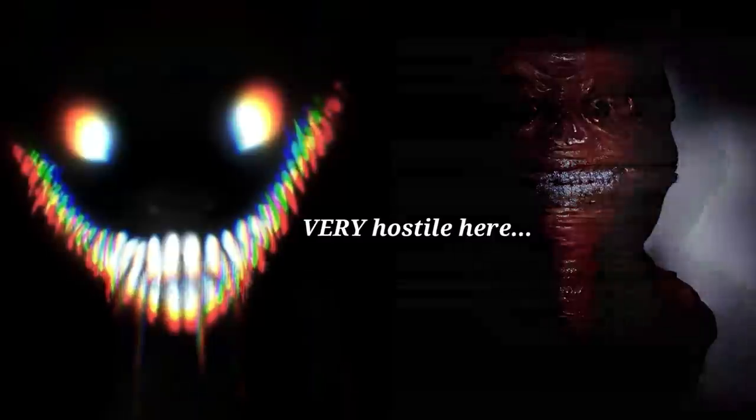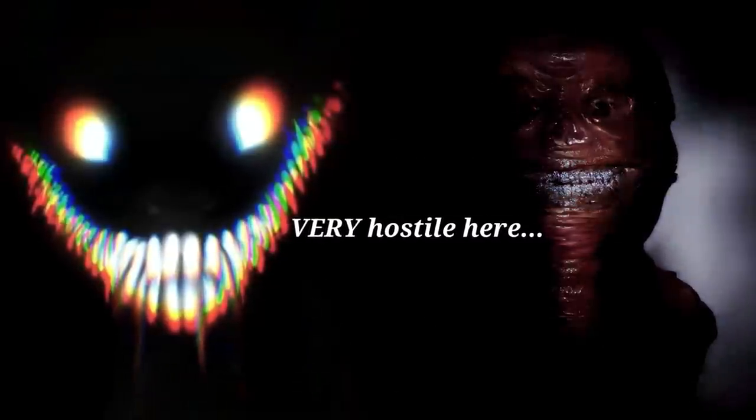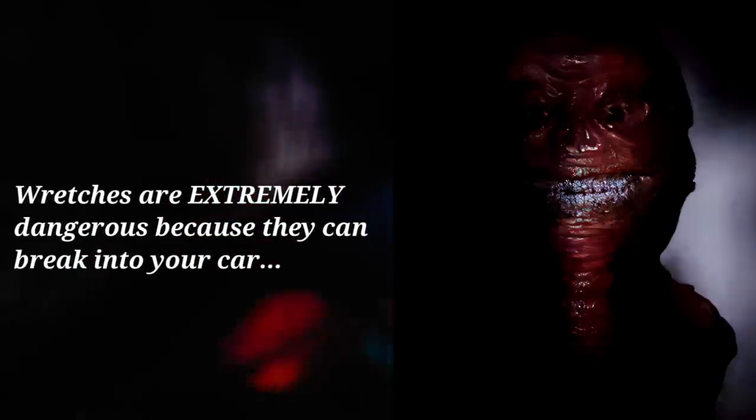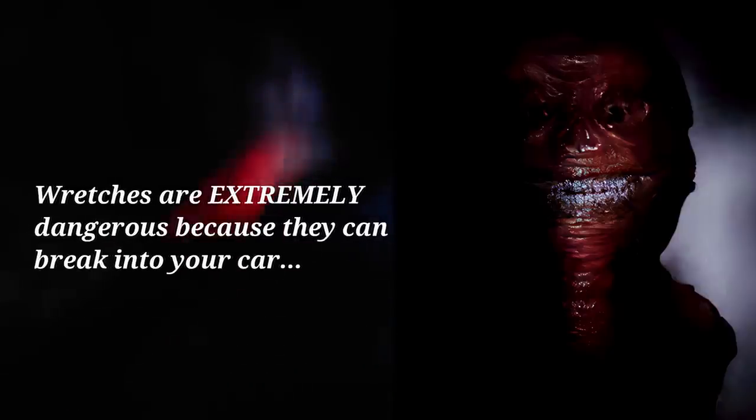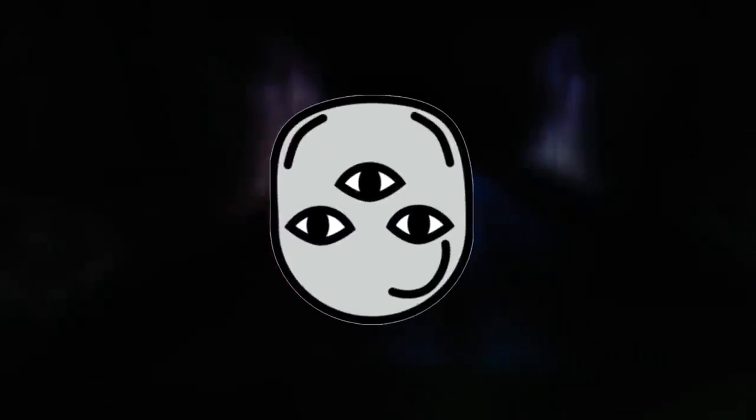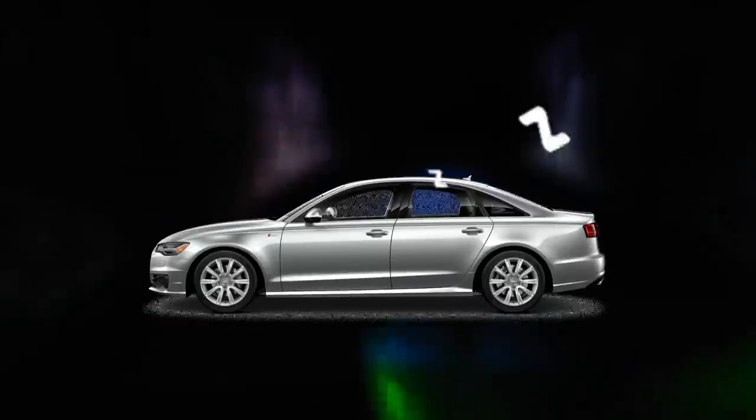The main normal entities here are Smilers and Wretches, which are extremely hostile on this level because they don't have anything else to eat. So when they see you, they start drooling and get really aggressive. Wretches are considered to be extremely dangerous here because they can break into your car if you're parked or something like that. Or if you crash into one, it can cause your car to fly off the road into the concrete wall. Just try to avoid them. Like, imagine sitting in your car and trying to take a nap and then you wake up and see one of these things. Nice.